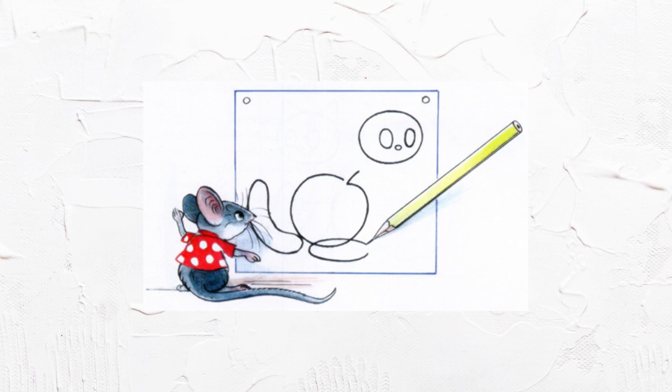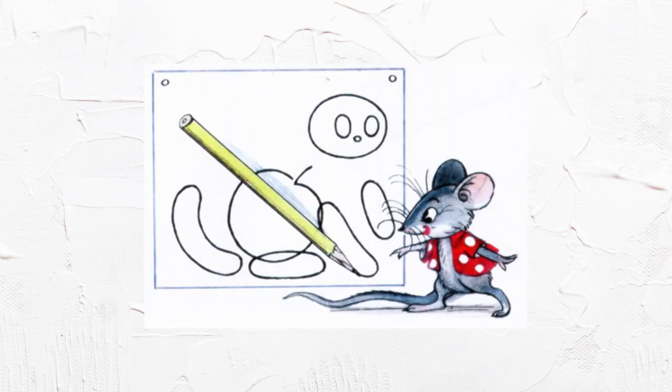Pencil, just wait a moment, said the pencil. And when he started drawing those corners, the mouse shouted, Mouse, this looks like a cat. Stop drawing more. But the pencil had already drawn big mustaches.